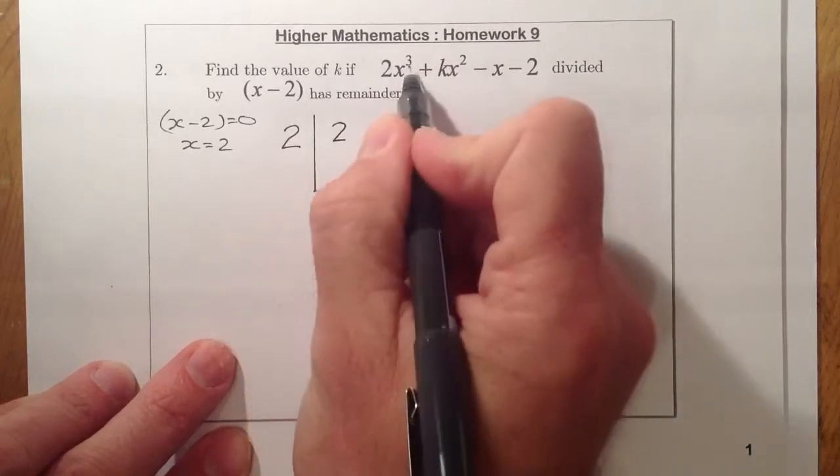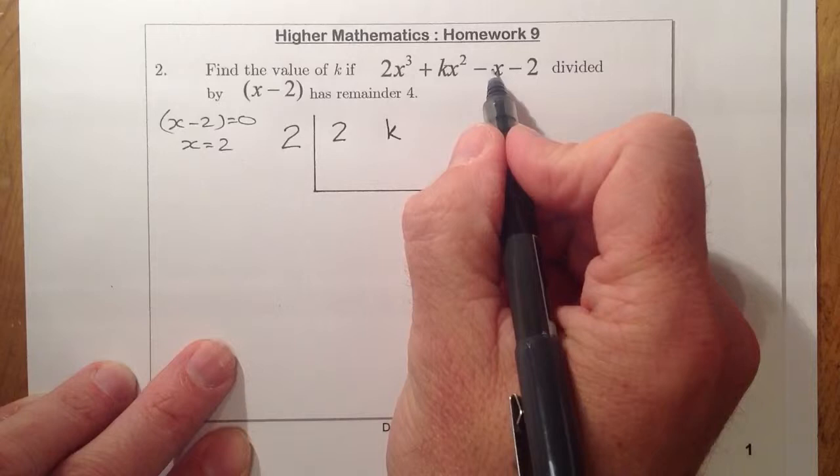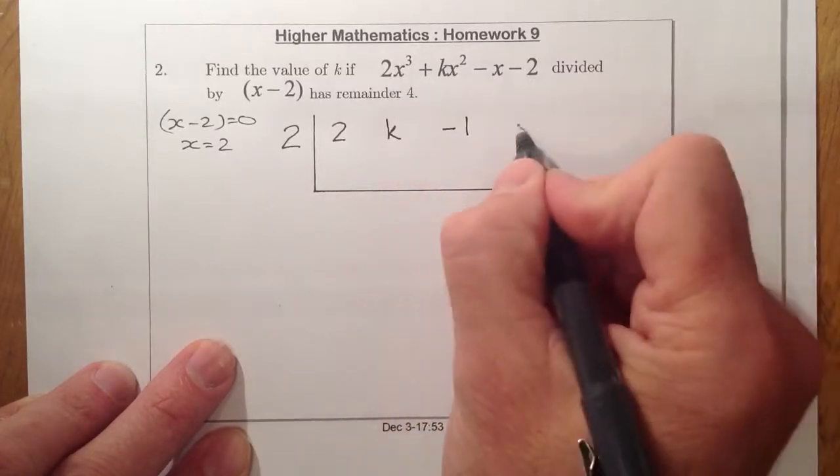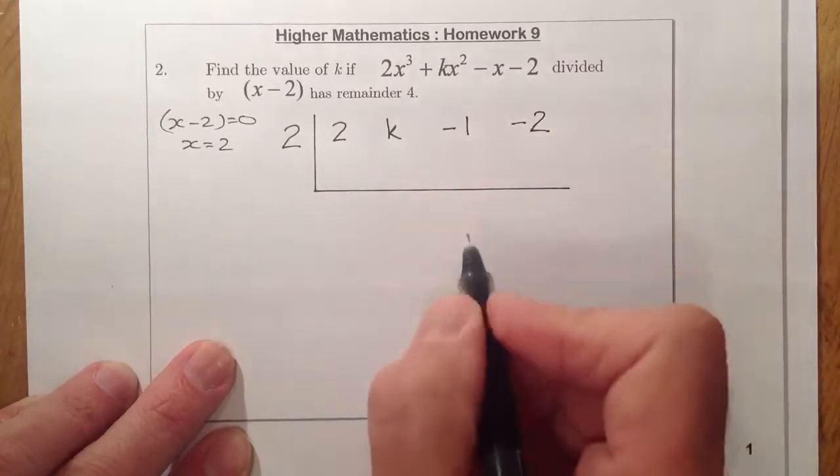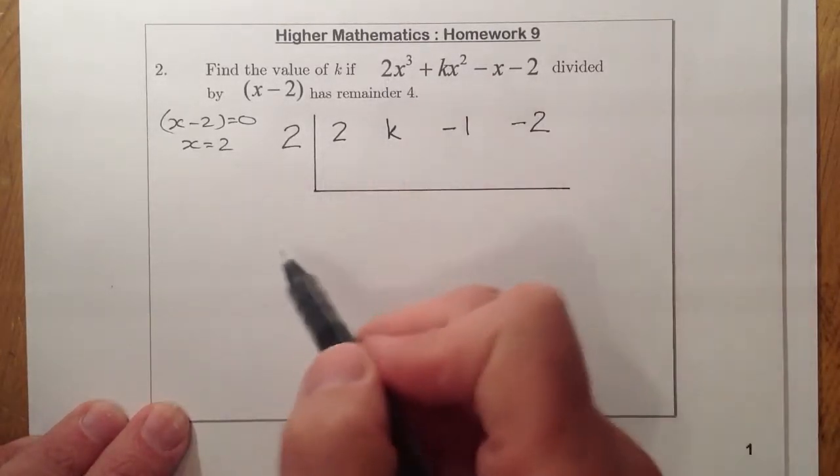So I'm going to bring a two, I'm going to bring k, I'm going to bring a minus one, and I'll bring on a minus two from here. Okay, so that's when we've got the coefficients all written down for synthetic division.